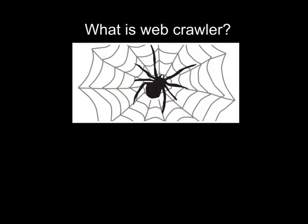Webcrawlers can copy all the pages they visit for later processing by a search engine that indexes pages downloaded. How it works? A list of URLs is visited by webcrawlers and it is known as seeds. Then the webcrawlers start crawling through the hyperlinks which are given by websites.